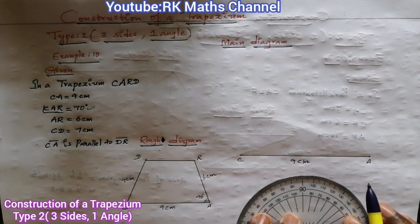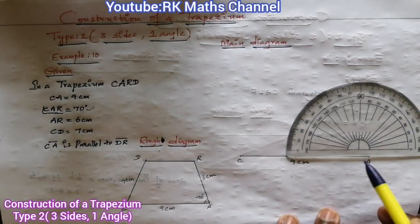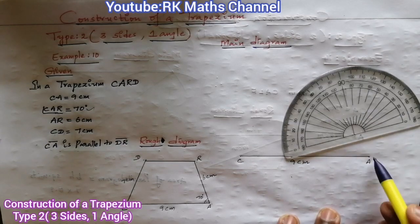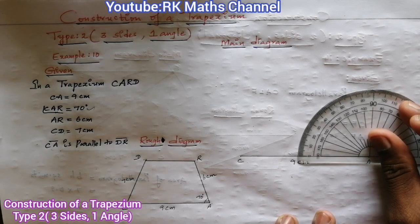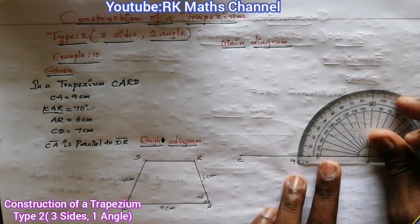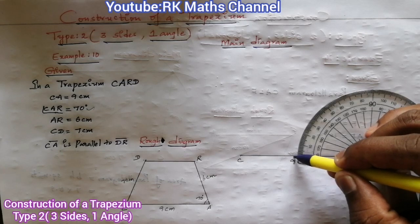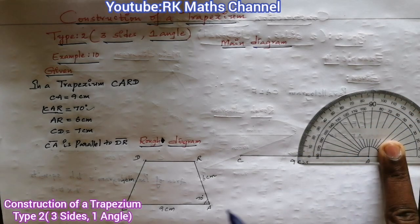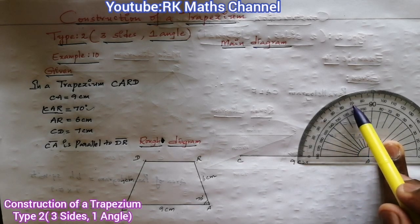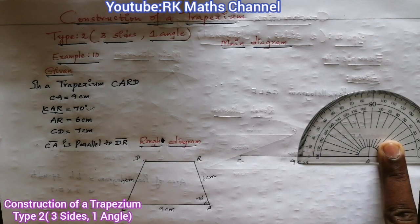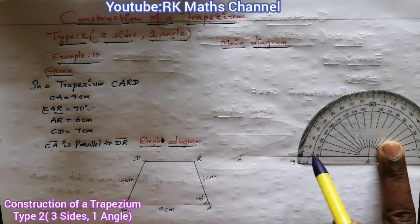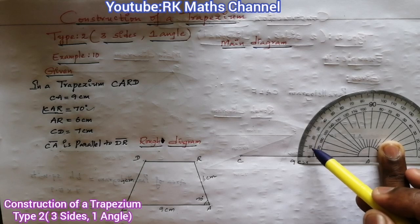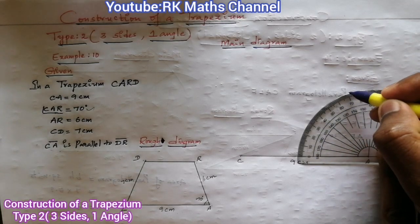Now place the protractor with its center point at vertex A and align the baseline with the 180-degree straight line. We use the outer scale starting from 0. Count along the outer scale: 10, 20, 30, 40, 50, 60, 70 — mark the point at 70 degrees.